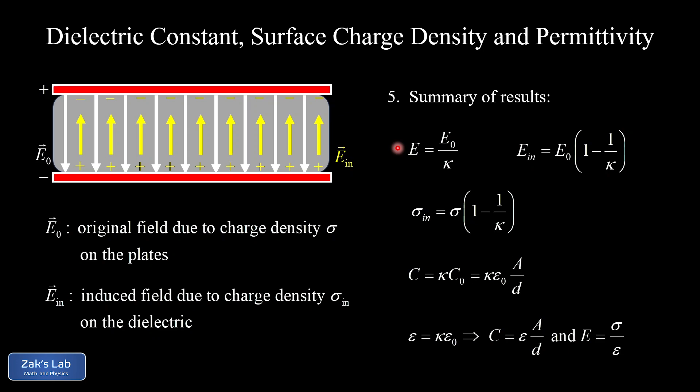A quick review: the electric field between the plates of this capacitor is reduced when we put a dielectric in there because the induced electric field points opposite to the original electric field and partially cancels it out. We defined the dielectric constant by this relationship: the net resulting field equals the original field divided by the dielectric constant kappa.